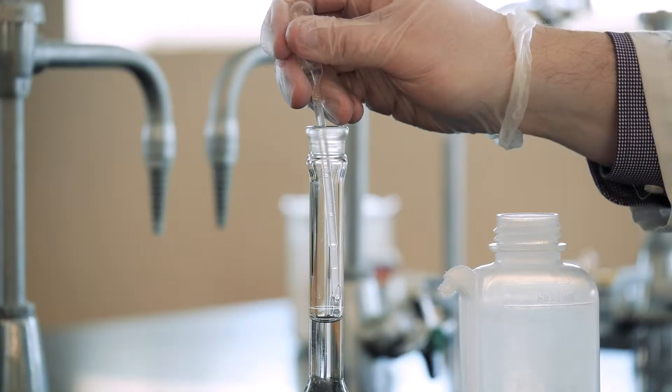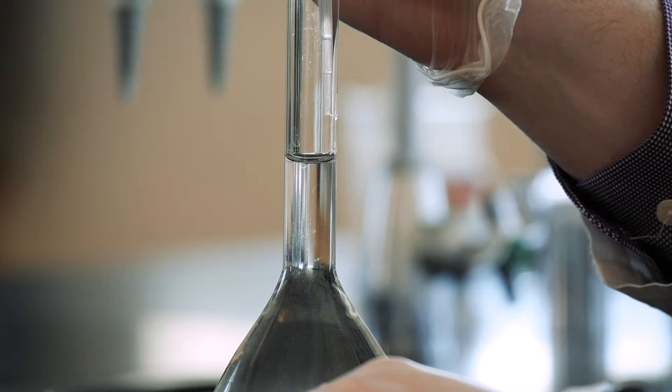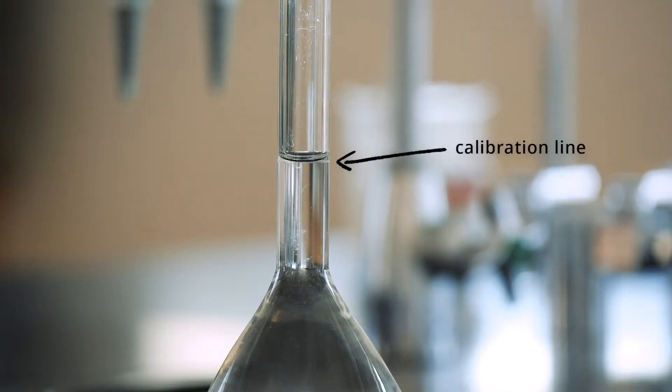As you get close to the line, start adding the water with a dropper. Fill the flask until the meniscus is resting on the line at eye level.